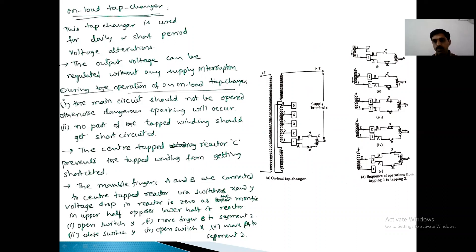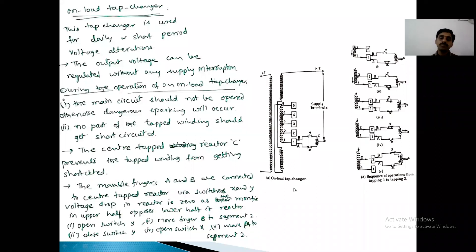The center-tapped reactor prevents the tapped winding from getting short-circuited. Otherwise, when both taps are connected, there is a short circuit current flow — the two currents flow in a closed loop and the winding gets short-circuited. That is why we use a center-tapped reactor. This is about the tap changing transformers.